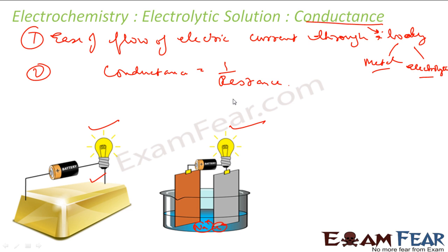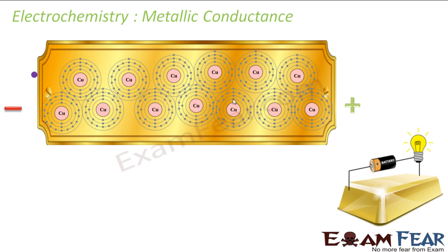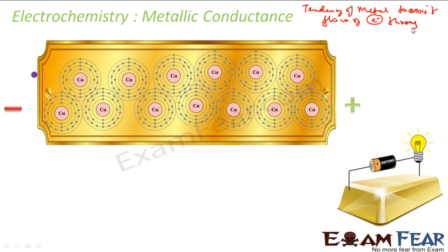Let's discuss metallic conductance. Metallic conductance is the tendency of a metal to assist the flow of electrons through it. It depends on the nature and structure of the material, the number of valence electrons per atom — since valence electrons are responsible for conducting electricity — and also on temperature. Metallic conductance actually decreases with increasing temperature.